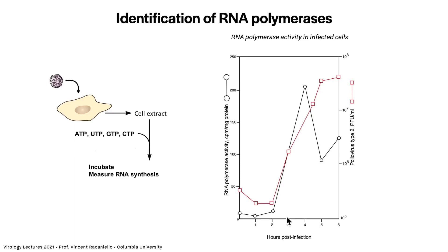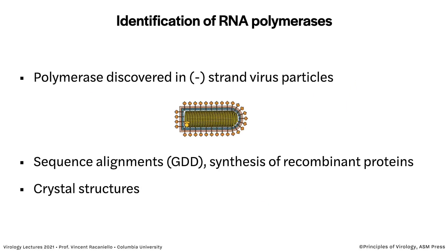Here's one of those early results shown on this graph. On the x-axis are hours after infection; on the left y-axis is RNA polymerase activity — the amount of radioactivity incorporated into RNA; and on the right is the virus titer in PFU per ml. This is an experiment with poliovirus. You can see RNA being made, and at the same time virus is being made as well. This was the first evidence that there is some activity in cells that can make RNA. In uninfected cells, you don't see anything — cells don't make RNA from RNA.